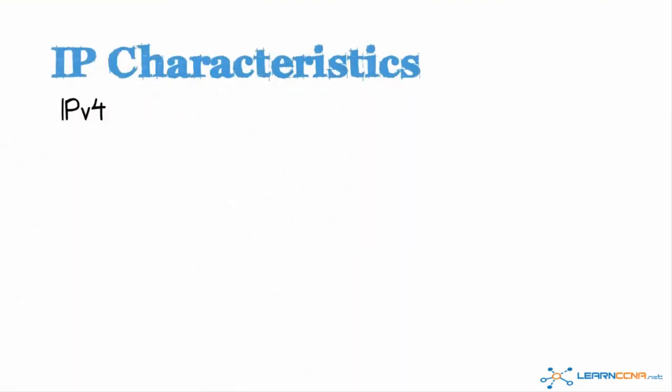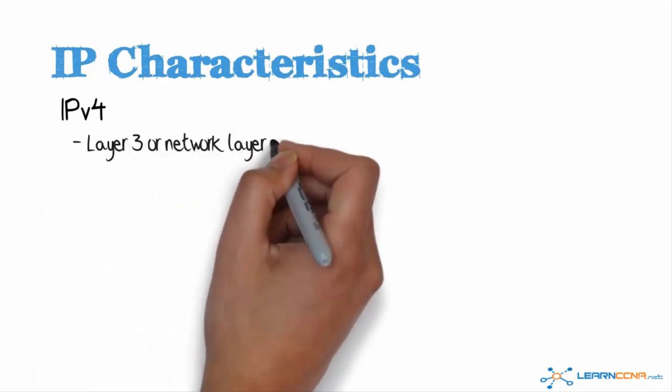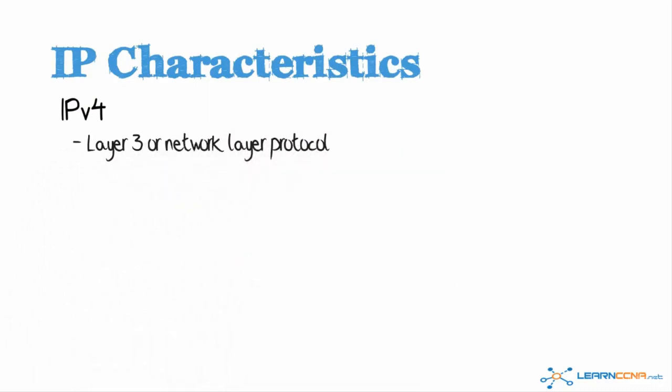IPv4, or Internet Protocol version 4, is a Layer 3, or Network Layer Protocol, as per the OSI model. In a different video, I explained the OSI model, so if you're not sure about layers, please refer to that video.